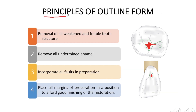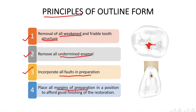Coming to the principles of outline form — there are few general principles on which an outline form is established, irrespective of type of tooth preparation. These principles are: removal of all weakened and friable tooth structure during the tooth preparation; removal of all undermined enamel, that is the enamel which has been undermined by caries. We have to incorporate all faults in the preparation, and we should place the margins of preparation in a position to afford good finishing of the restoration.